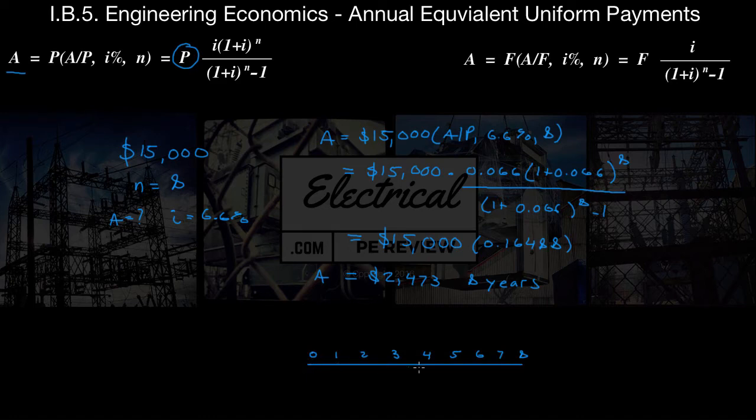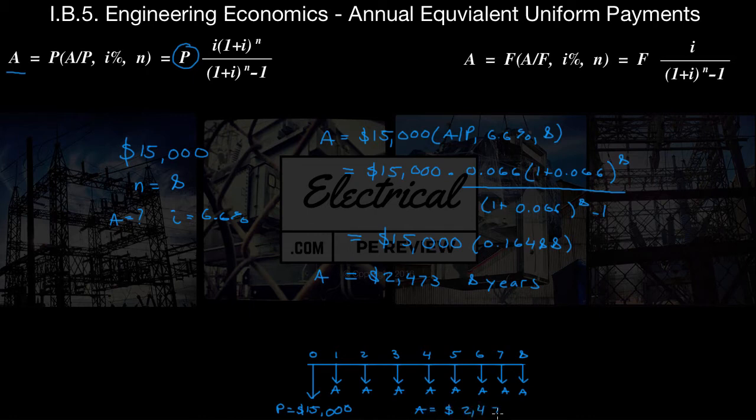So here's a cash flow diagram template for 8 years. At n equals 0, we have a total cost of P equals 15,000. And then what we wanted to find was A. So here's all of our A values and you're going to notice they're all the same. And that's why it's called the uniform annual payment, uniform to mean the same. We found a value of A equals $2,473.